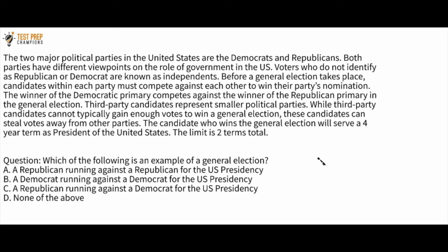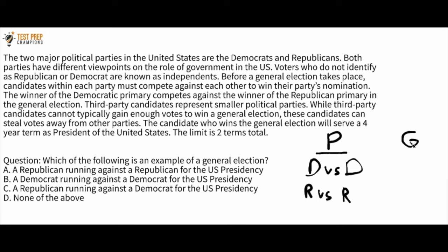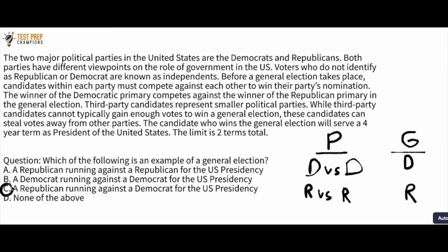Let's talk about the two different elections: the primary and the general election. In the primary election it's going to be Democrat versus Democrat, and also Republican versus Republican. Then once we get to the general election, out of all the Democrats in the primary, the winner moves on and takes on whichever Republican candidate wins the primary. So the general election is Democrat versus Republican. The answer here is C — a Republican running against a Democrat for the U.S. Presidency.